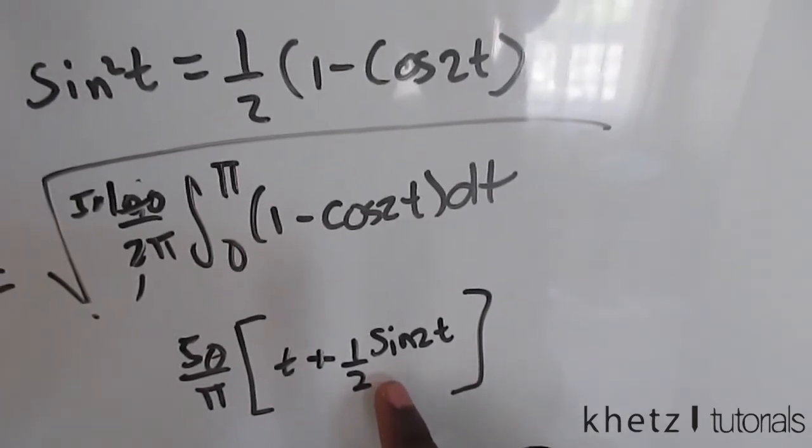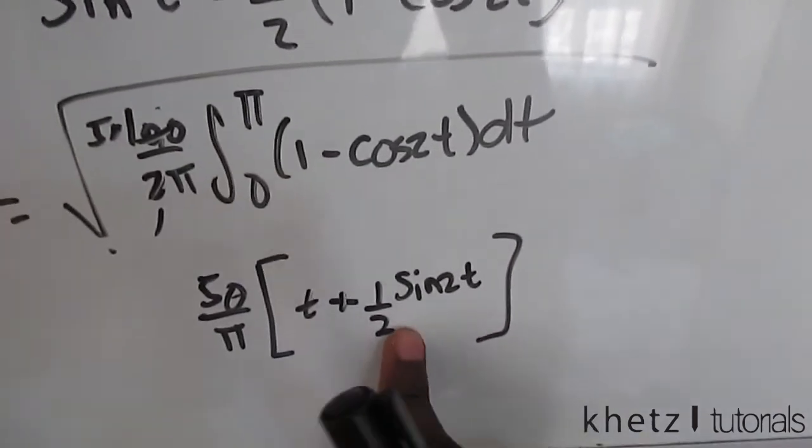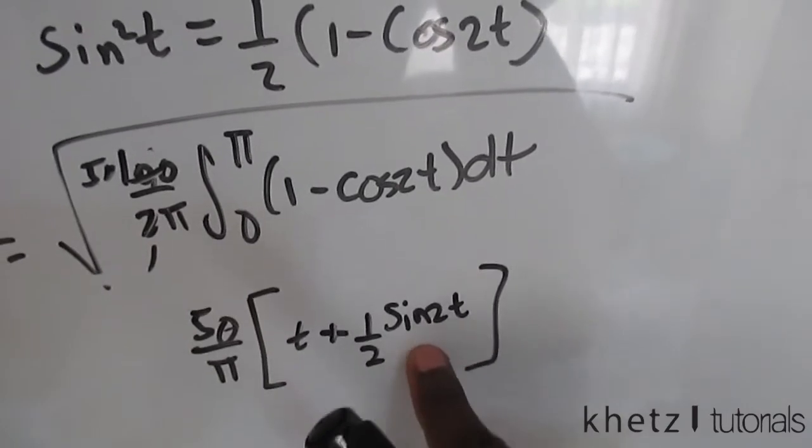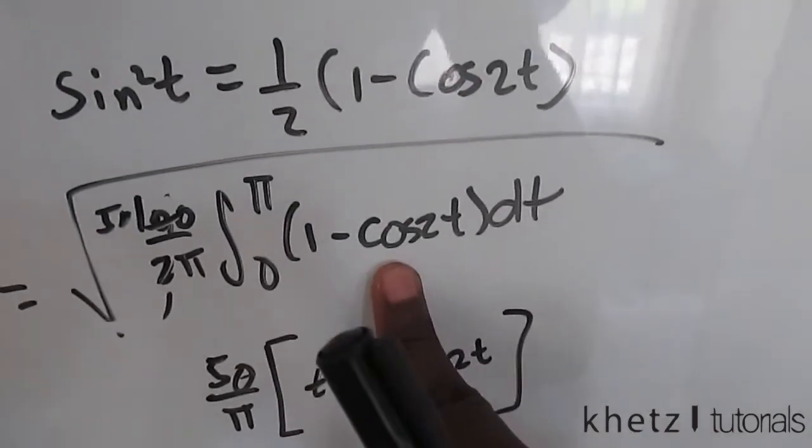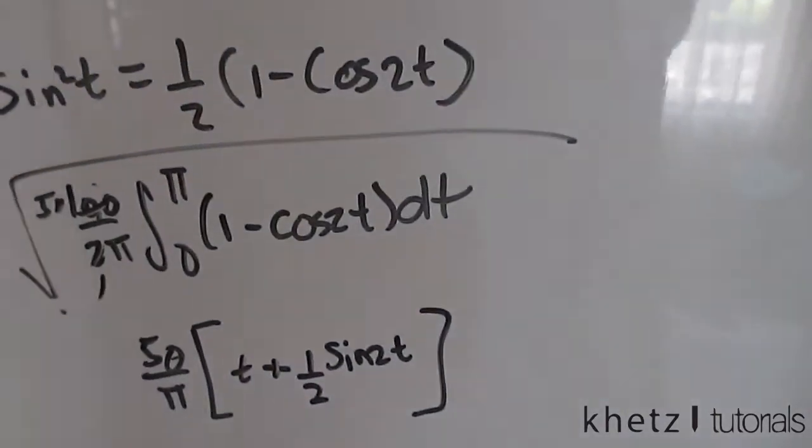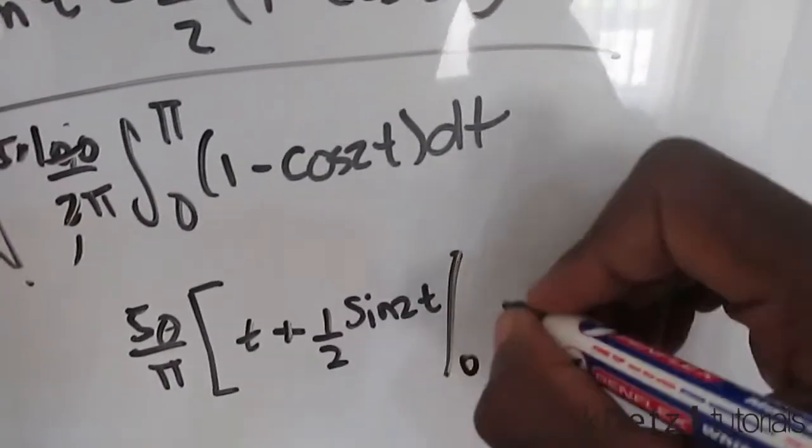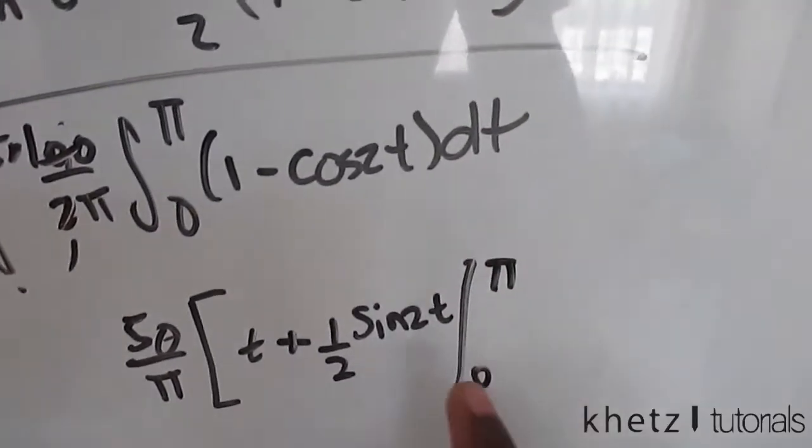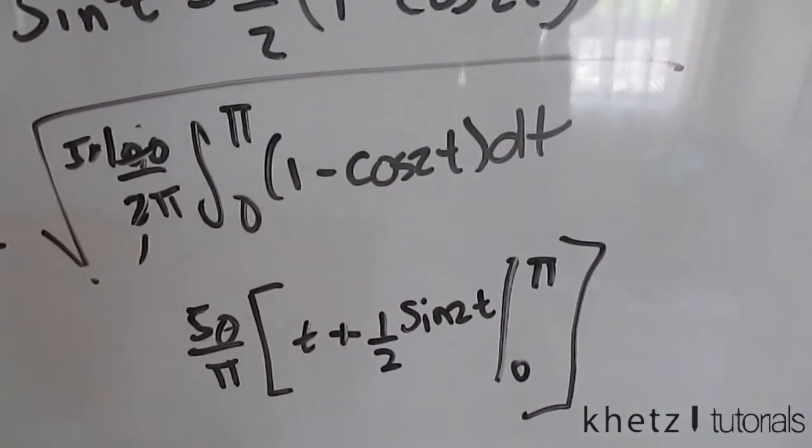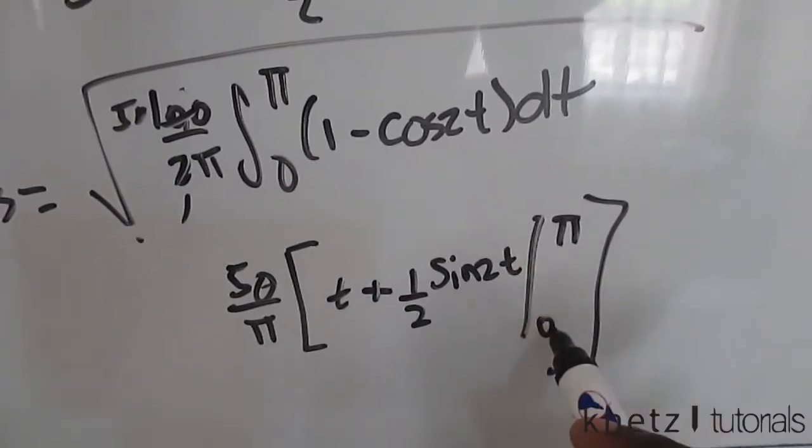Because if you differentiate this, you're going to have 2 going outside, so it's going to cancel out. So now integrate this to find the value, and you're going to be moving from 0 to pi.